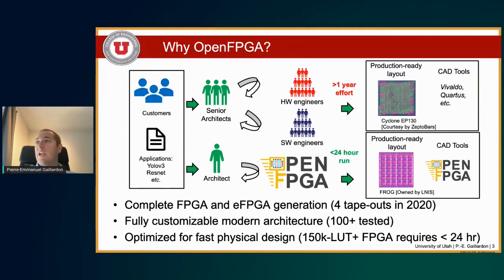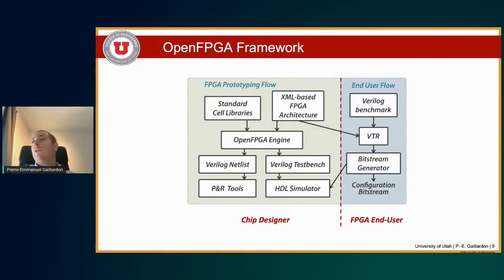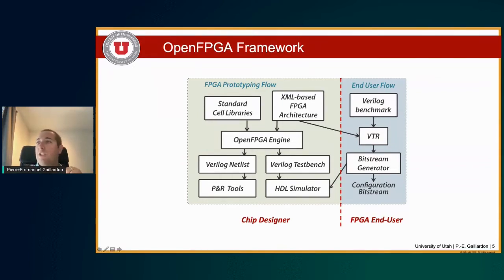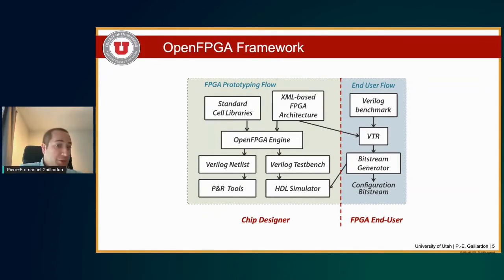We support modern architectures that are fully customizable — over 100-plus architectures in our test infrastructure, ranging from small FPGAs like Lattice iCE40 all the way up to more complex fabrics like 7-series Xilinx FPGAs. We have strong optimization for fast physical design. Designing mid-range fabrics of 150K to 100K LUTs requires only 24 hours. OpenFPGA is a complete framework that provides chip designing capabilities — what we call the FPGA prototyping flow — including chip design, fabrication, manufacturing, and FPGA end-user support, all in a single unified system.